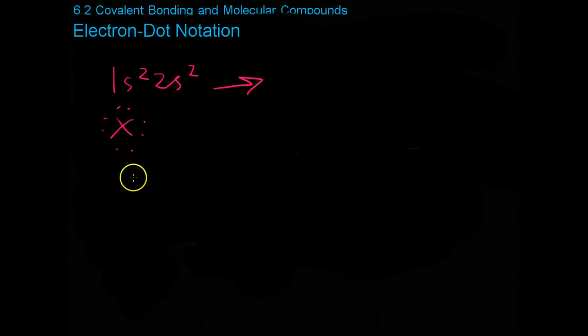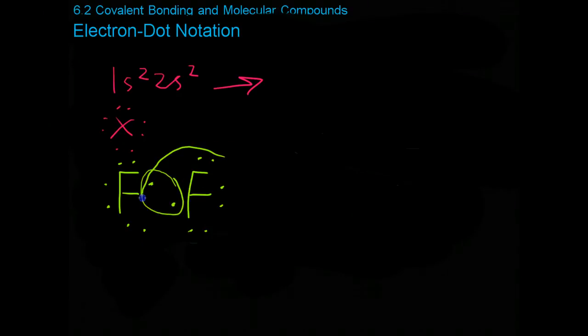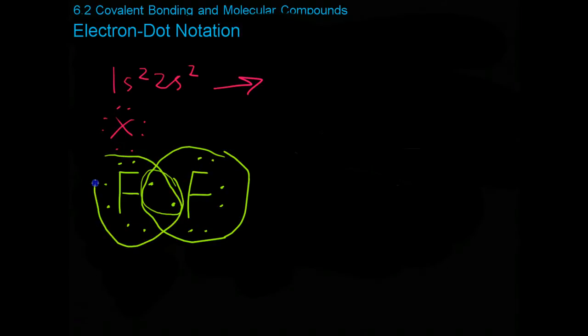This notation can be very useful for illustrating bonds. For example, if we take the fluorine-fluorine bond that we did earlier, and we draw out the electron dot notation. There's 7 on that fluorine, and 7 over here on this fluorine. You can put them together and see that these two right here are a shared pair, giving each 8 the full octet independently.